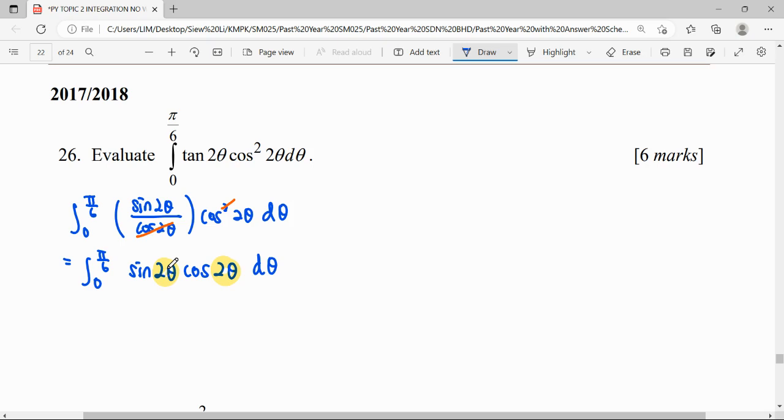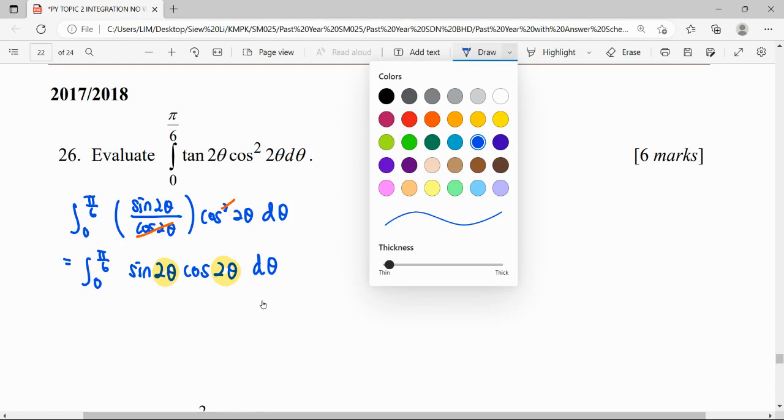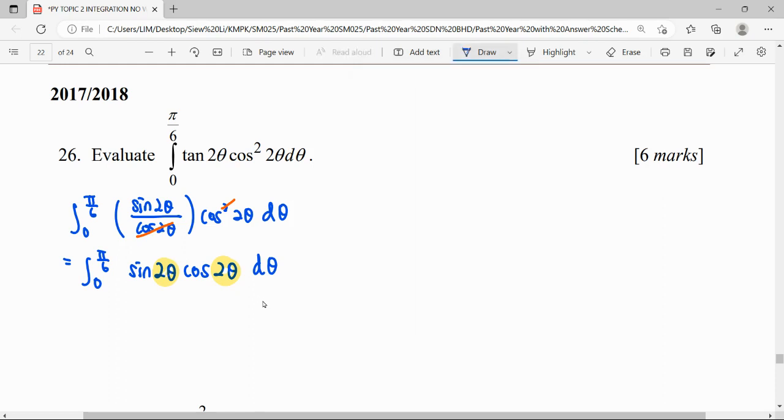So our formula - the chain function formula. Integrate a function, then we have the differential function on the side. We can straight away do function power plus one over the new power.